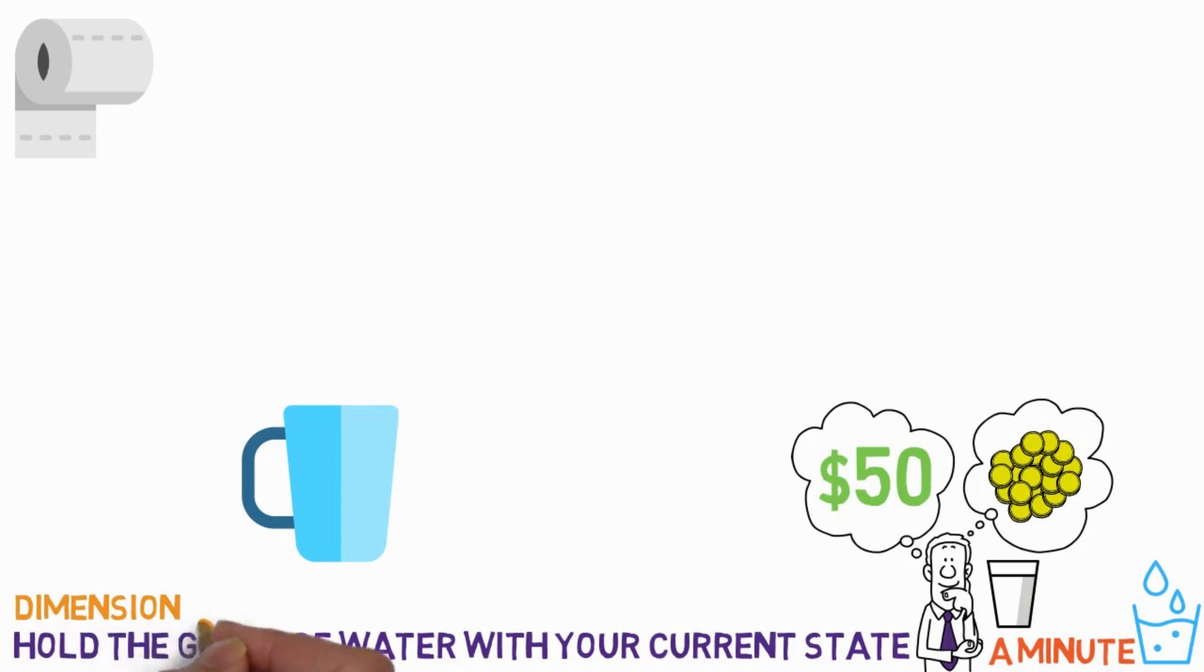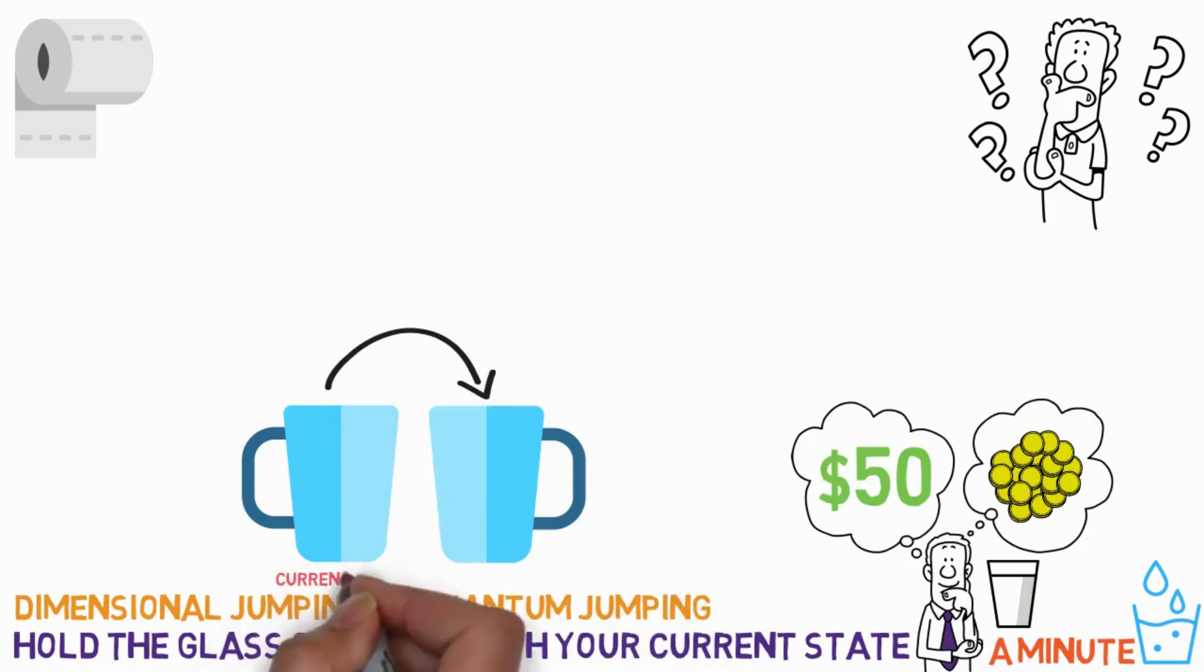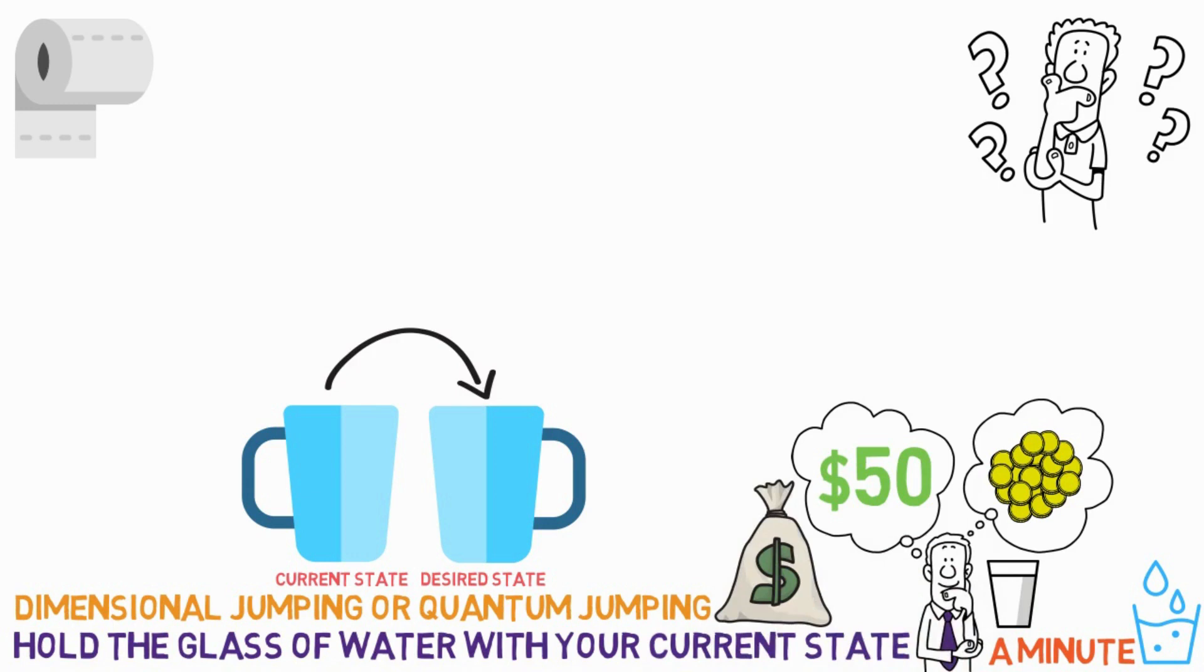After you finish this, you will conduct dimensional jumping, or quantum jumping. So, how are you going to do it? Hold both glasses in your hands, and slowly transfer the water from your current state to the glass labeled desired state. While pouring the water, it is important that you think that a transition is happening.